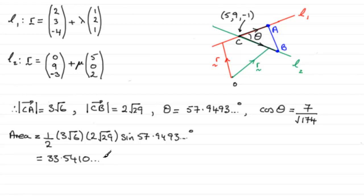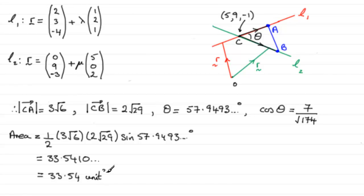And if we round this to two decimal places, then we're going to have 33.54 as the area. I quite often like to write unit squared for the area, but that's up to you. And that is to two decimal places.